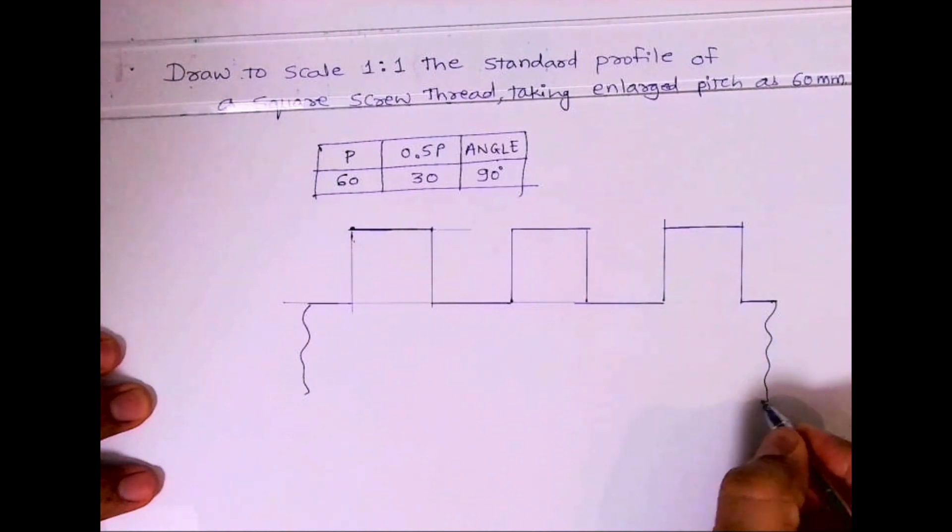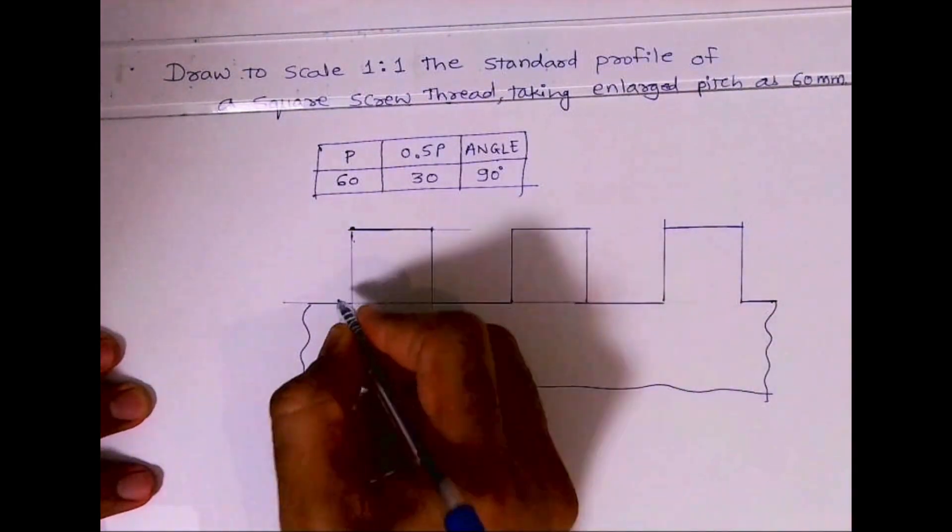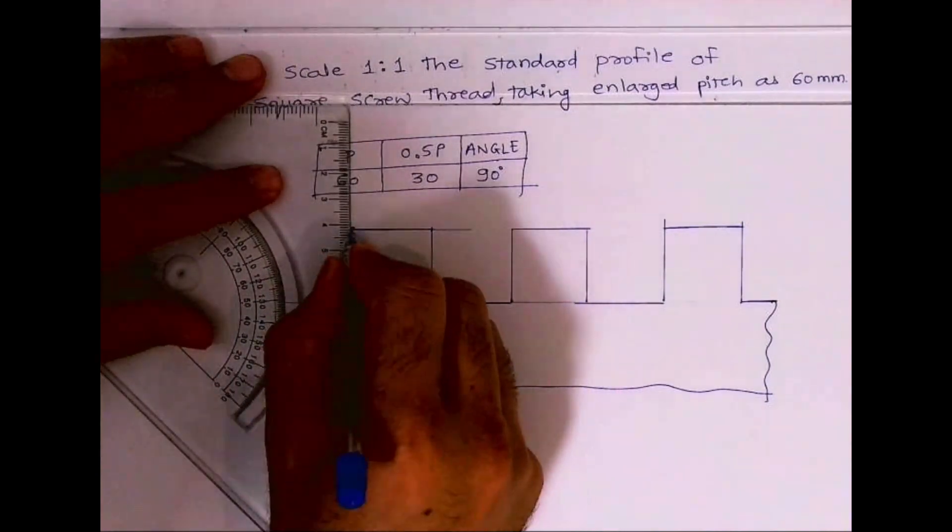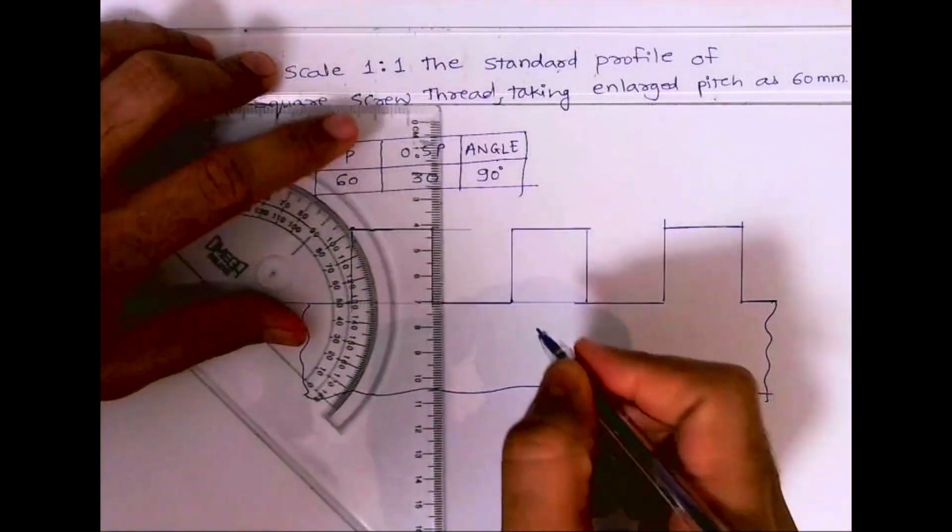Then you draw a freehand line like this. It can be of any length. This is the square screw thread.